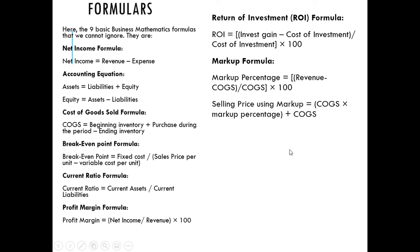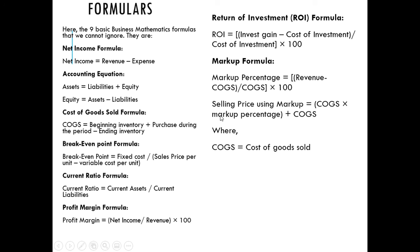When you are given the markup price as a percentage, your selling price is calculated as: cost of goods sold times markup percentage, plus cost of goods sold. So if the question requires you to find the selling price and you have been given the markup percentage and the cost of goods sold, use that formula where COGS is cost of goods sold.